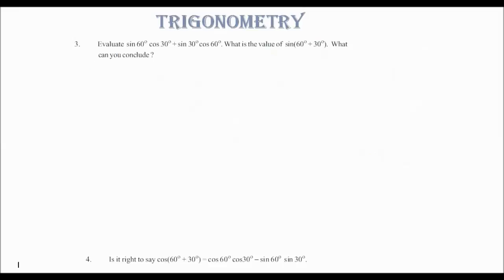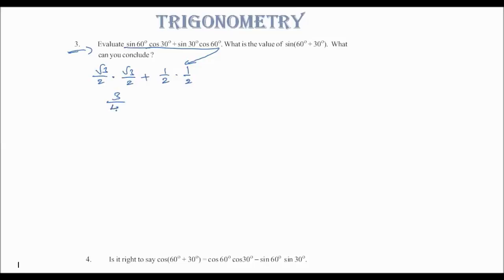Third problem: sin60·cos30 + sin30·cos60. sin60 = √3/2, cos30 = √3/2, sin30 = 1/2, cos60 = 1/2. So we get (√3/2 × √3/2) + (1/2 × 1/2) = 3/4 + 1/4 = 4/4 = 1. The answer is 1.